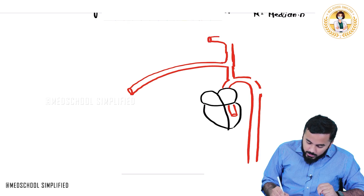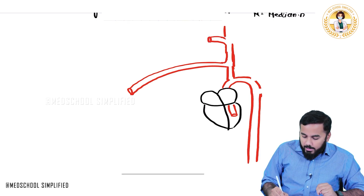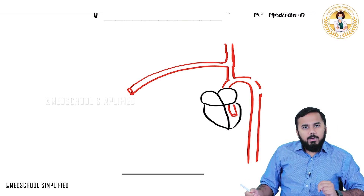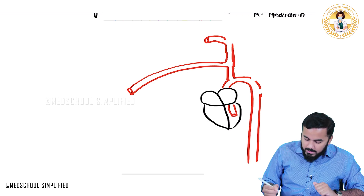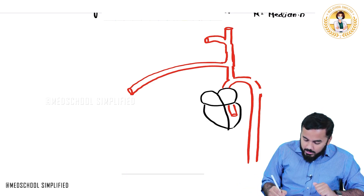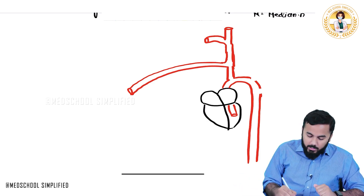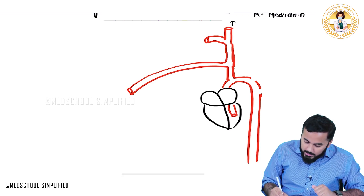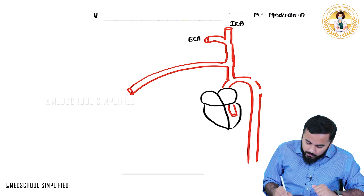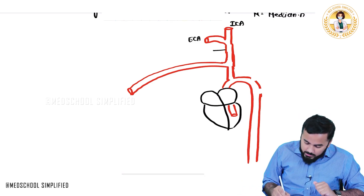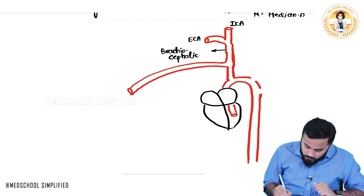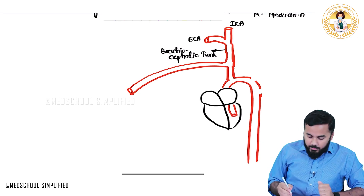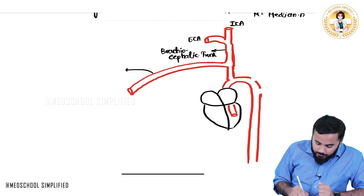The common carotid artery divides into two branches: the one going out is called the external carotid artery, and the one going inside is called the internal carotid artery. And this branch over here is called the subclavian artery.